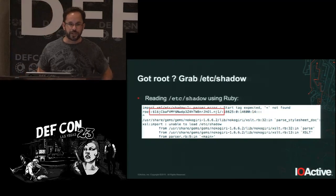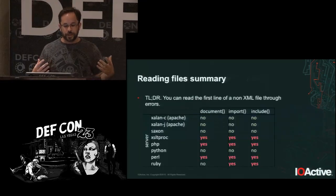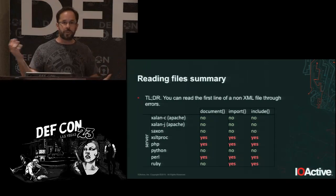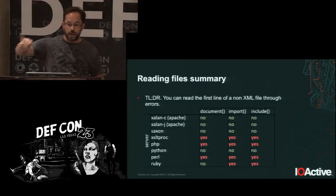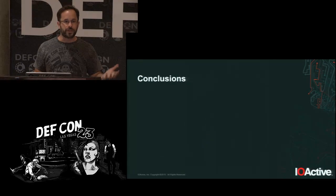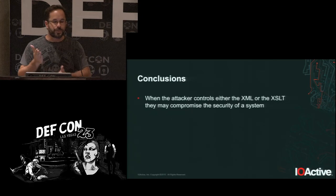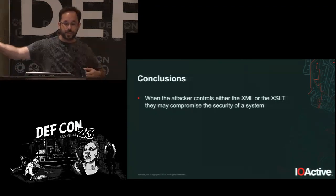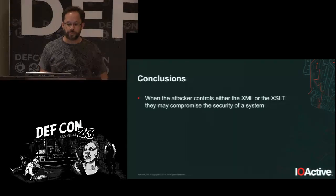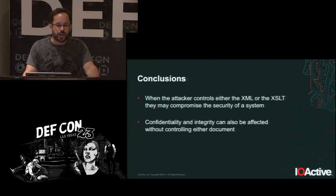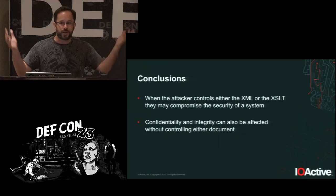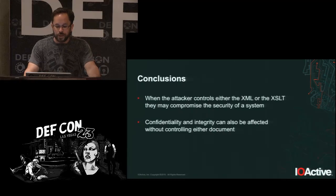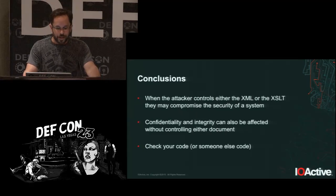This is pretty interesting because it opens the possibility for XSLT to be as valuable as external entity expansion for retrieving information. If an attacker can compromise an XSLT — and there are applications that allow XSLT to be uploaded — or control an XML relying on document, include, or import functions, they may compromise application security. As we saw, we don't always need direct access: sometimes random functions or integer errors do the work for us. I recommend checking your code for any of these issues.